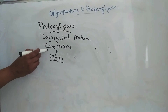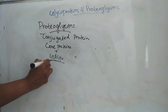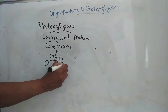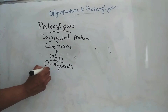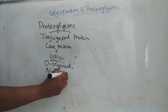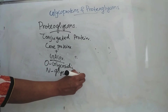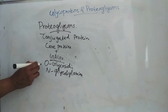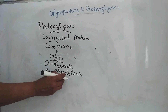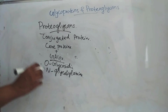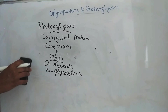The linkages between the core protein and the glycosaminoglycans include O-glycosidic linkage and N-glycosilamine linkage. The O-glycosidic linkage is unique to proteoglycans, and the N-glycosidic linkage is seen in keratin sulfate 1. So that is about proteoglycans.